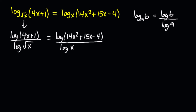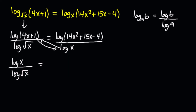What I'm going to do is cross multiply and rearrange this entire equation. I'm going to send this to the numerator of that side, and the numerator of x becomes the denominator of that. So I get: log of X divided by log of root X is equal to log of (14x² + 15x) minus 4, divided by log of (4x + 1).